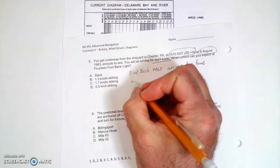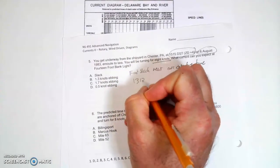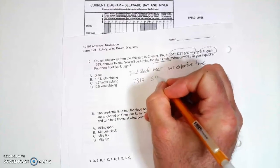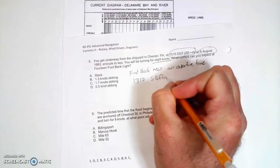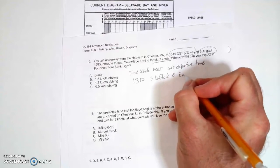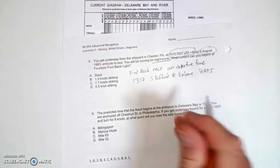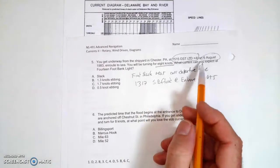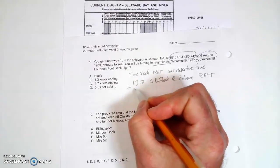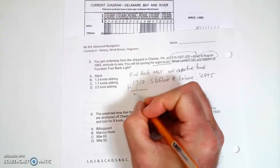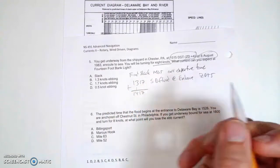So I'm going to go 1317. That's the slack before flood at the entrance, and that is ZD plus 5 because that's what the book is in. They tell me that I'm keeping plus 4, so I got to add an hour to that. So it's going to be 1417.